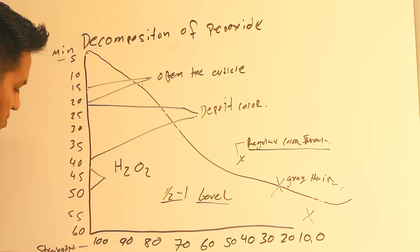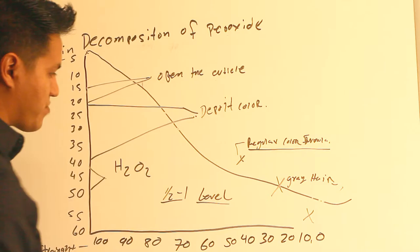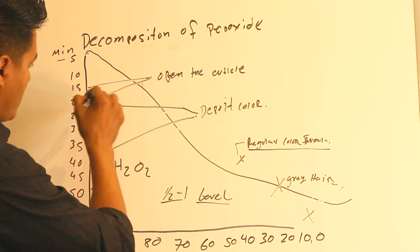What I have right here is the composition of the peroxide. I have the minutes: 5 minutes to 60 minutes. I have 100% strength on the peroxide down to 0% strength.